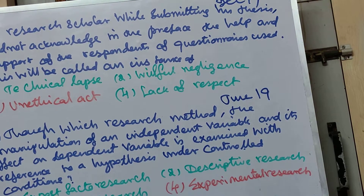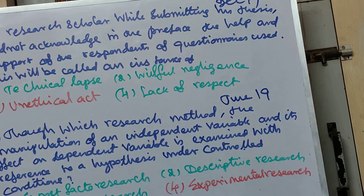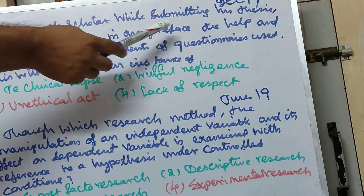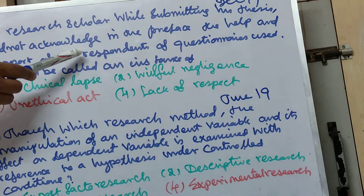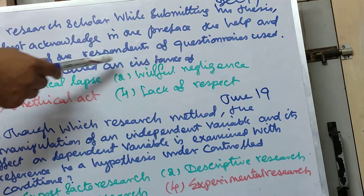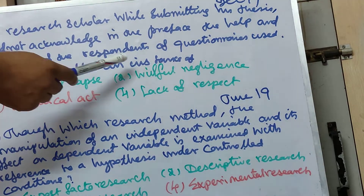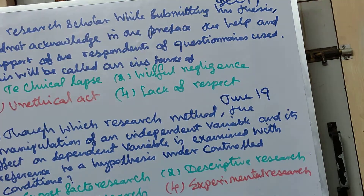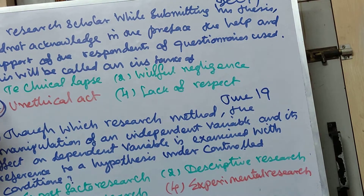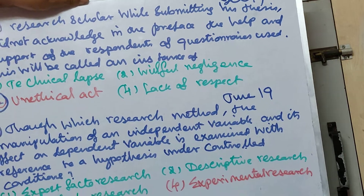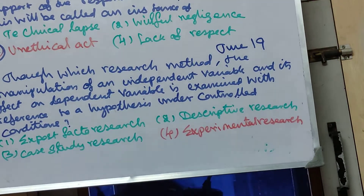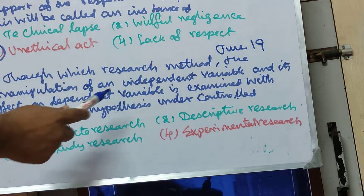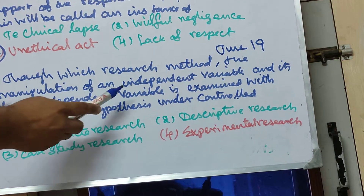NET Paper 1 Research Aptitude, December 2019. Number 1: A research scholar, while submitting his thesis, did not acknowledge in the preface the help and support of the respondents of questions. This will be called an instance of — correct answer — unethical act.